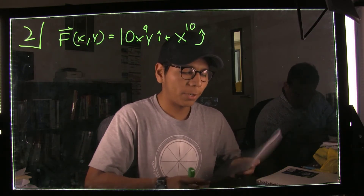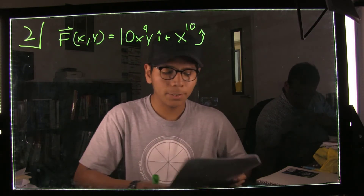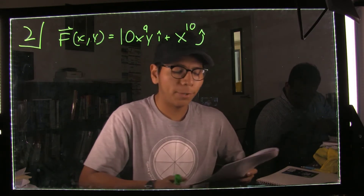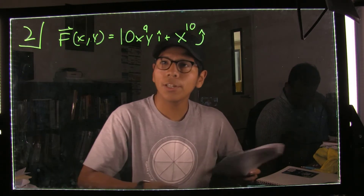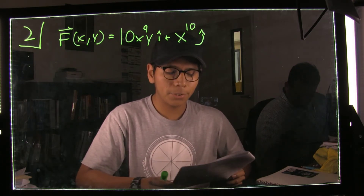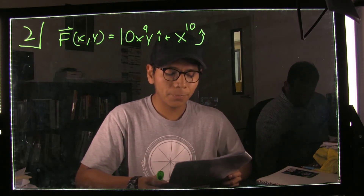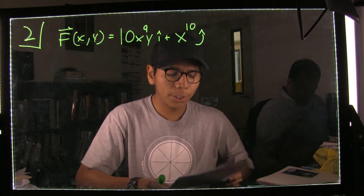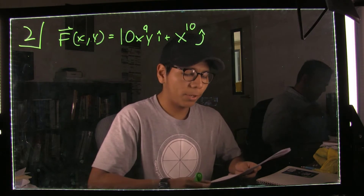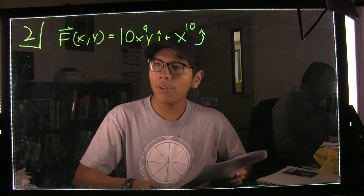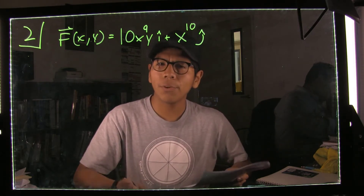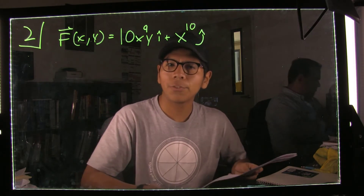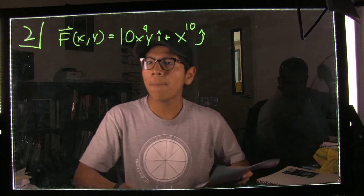This problem is showing you a vector field function, and it's asking you to figure out whether it's conservative, and if it is conservative, to find the potential function of it.